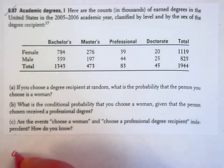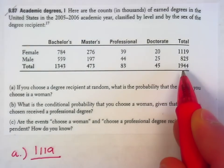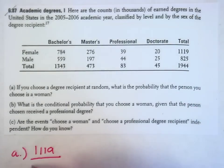So that probability in part A, we have a total of 1,119 compared to the table total of 1,944. That's it.